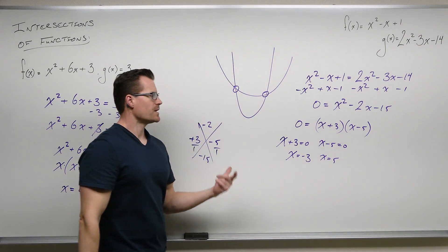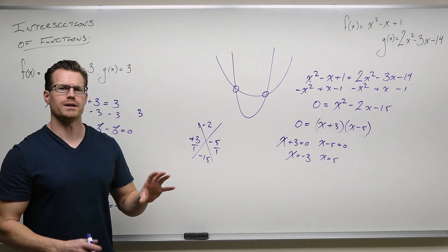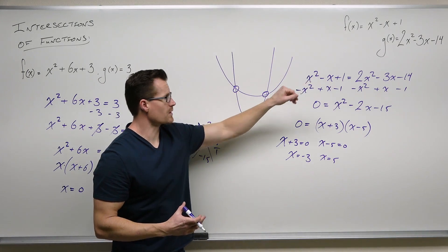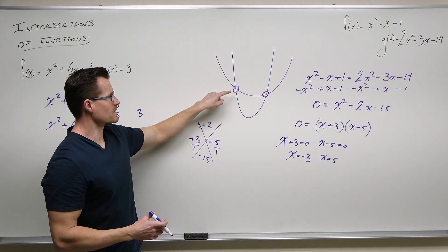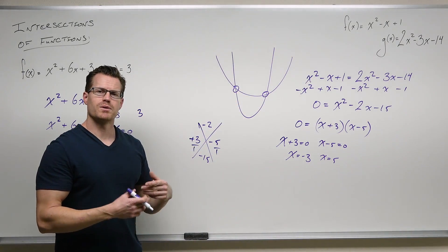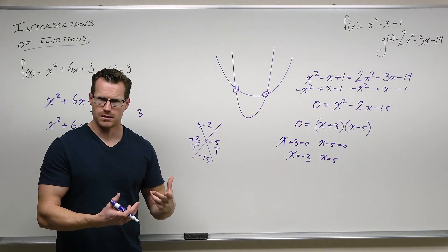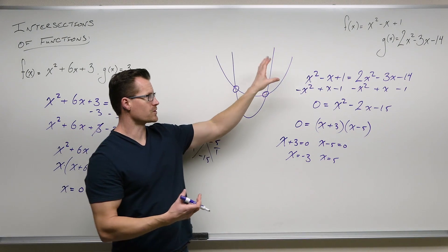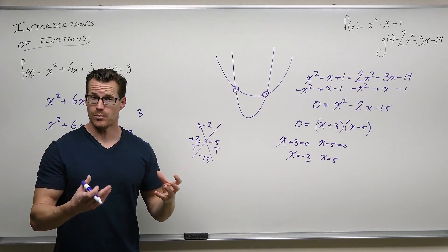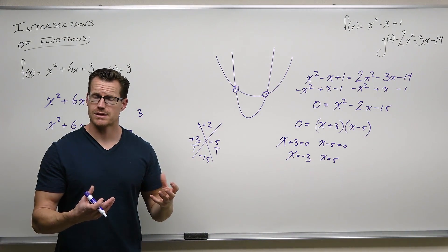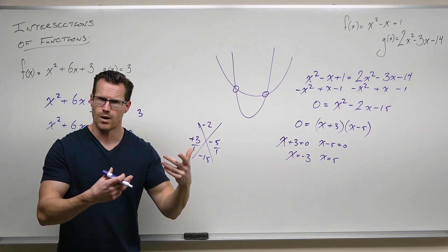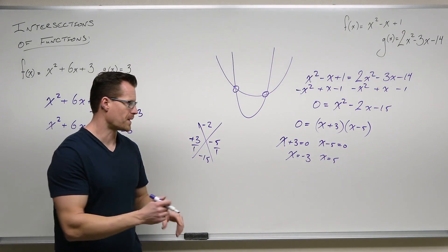We now have the x-coordinates of our points of intersection of this parabola intersecting the other one. Our x values are this and this. If we plug them into our functions and evaluate at these values, we'll find the outputs — that's how functions work: plug in the x, get the y, that gives you an ordered pair.